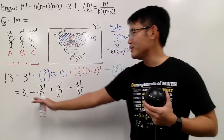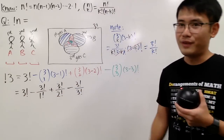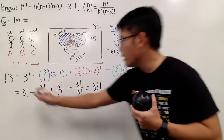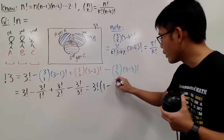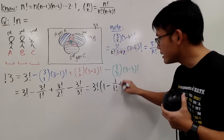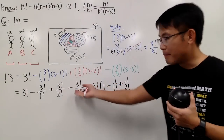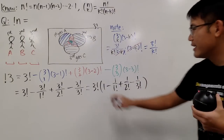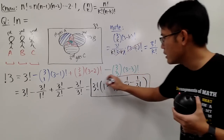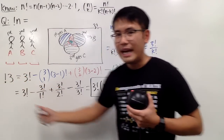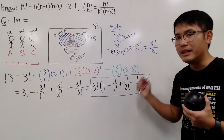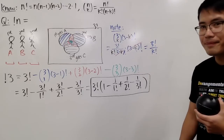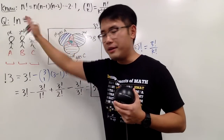So let's put these down: three factorial, minus three factorial over one factorial, plus three factorial over two factorial, minus three factorial over three factorial. Everyone has three factorial, so of course we can factor that out. When we do that, we get three factorial times the quantity: one minus one over one factorial, plus one over two factorial, minus one over three factorial. This is how you compute subfactorial of three, and notice this is an explicit formula — it does not depend on the previous term, unlike the recursive formula we did last time.